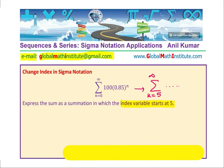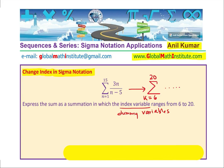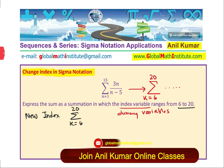So, let's begin with the very first question where we want to change the index from n equals 1 to 15 to something else which I have written as k equals 6 to 20. So, one thing you notice here is that we are already given the new index. So, we are given the new index, which is from 6 to 20. So, we know that we have to write something in this particular form.